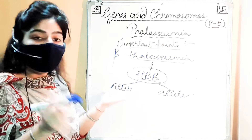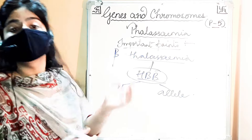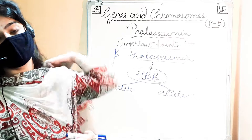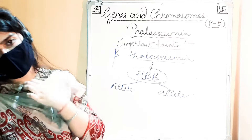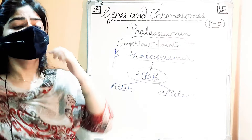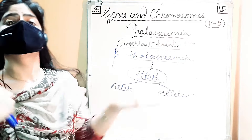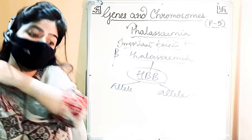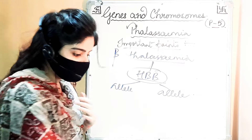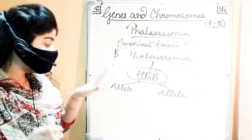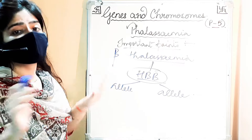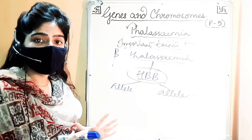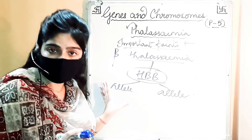In beta thalassemia, if there is one allele defected, that person will be the silent carrier — or we can say minor carrier. If two alleles are affected, that will be the major carrier of this disease.